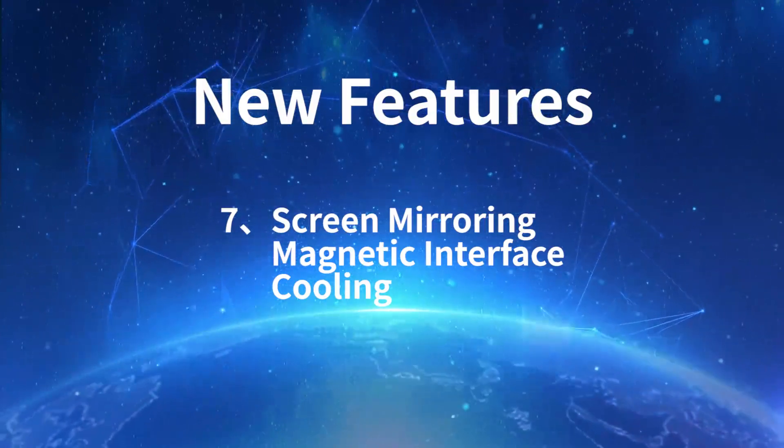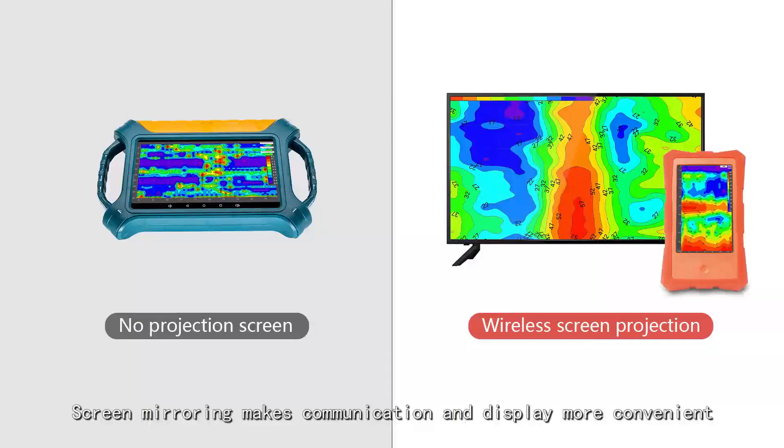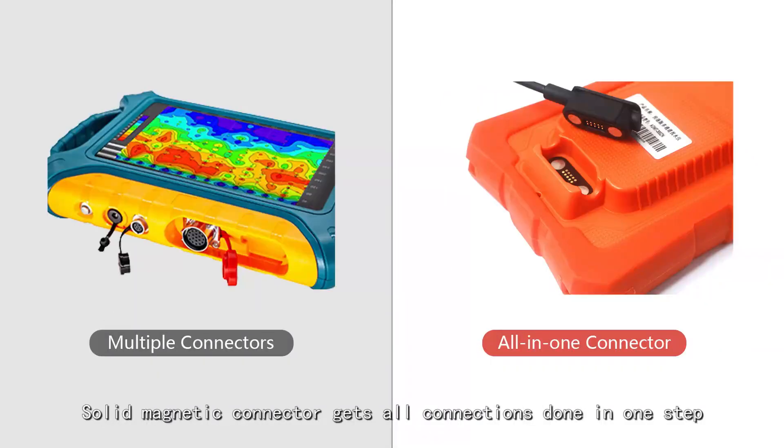Feature 7: Screen Mirroring, Magnetic Interface, Cooling. Screen Mirroring makes communication and display more convenient. Solid magnetic connector gets all connections done in one step. Cooling on the backside ensures smooth running.